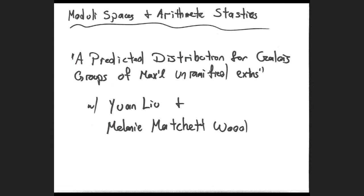I'm going to talk about recent joint work with Melanie Matchetwood and Yuan Liu. The paper is on the archive and on our webpages, called 'A Predicted Distribution for Galois Groups of Maximal Unramified Extensions.' I'll split the talk roughly half and half between the number theory side and the function field side. I was kind of the stacks ringer for this project, and I'll explain what that means later.